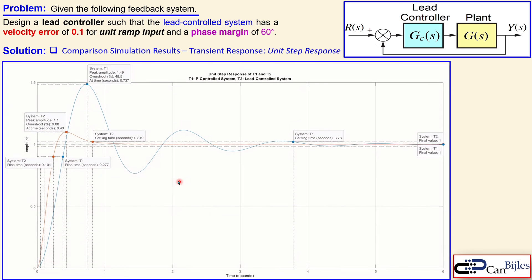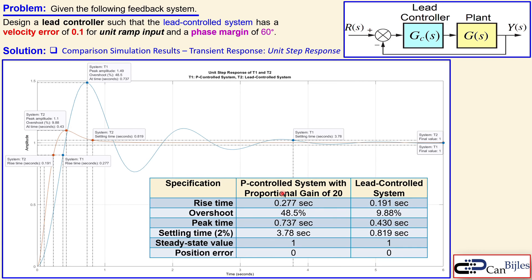In summary, the phase margin has increased substantially for the lead control system as required. Comparing unit step responses, the lead controller (orange) dramatically reduces rise time, peak time, settling time, and overshoot compared to the P controller (blue) with gain 20, while maintaining a steady-state position error of zero. The lead controller design using the frequency response method is now complete. If you have any questions or comments, please let me know.